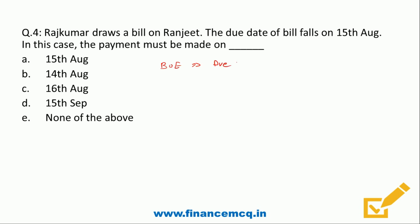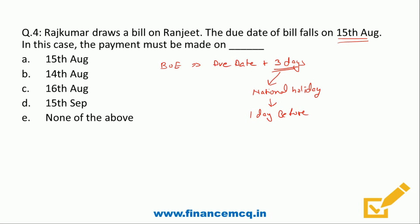There are certain situations — what if the third grace day falls on a national holiday? Then the due date will be one day before. In this case, 15th August is Independence Day, a national holiday. So the due date shifts one day before 15th August, which is 14th August. Option B is the correct answer.